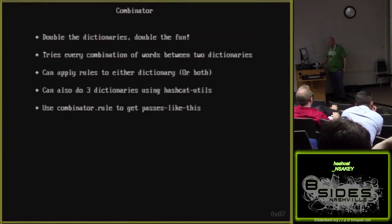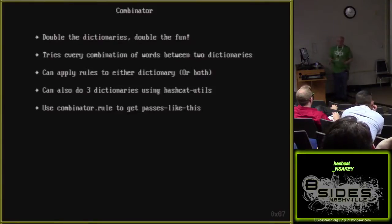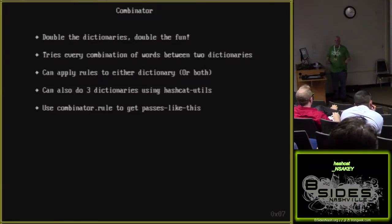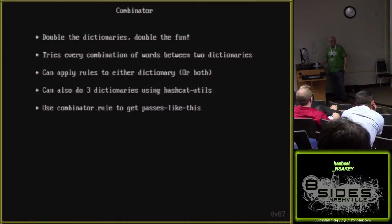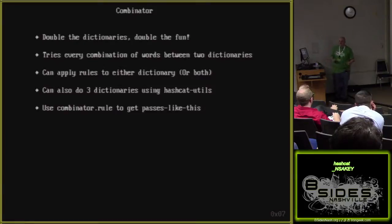The combinator attack takes two dictionaries — you can specify the same one twice or two different ones — and combines every word with every other word. You can also apply rules to one or both halves. Once you get to a certain level you might want to look into hashcat-utils, which has a three-way combinator that you pipe the output into Hashcat.